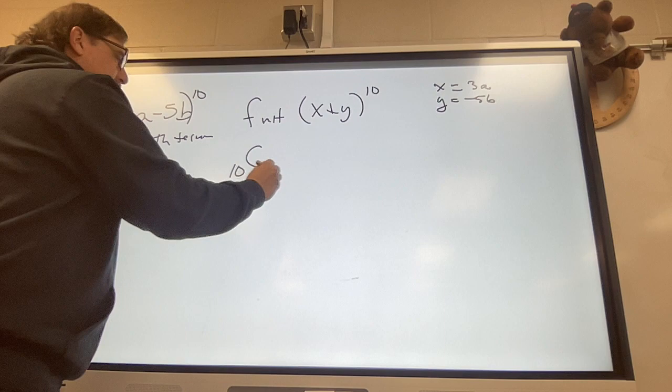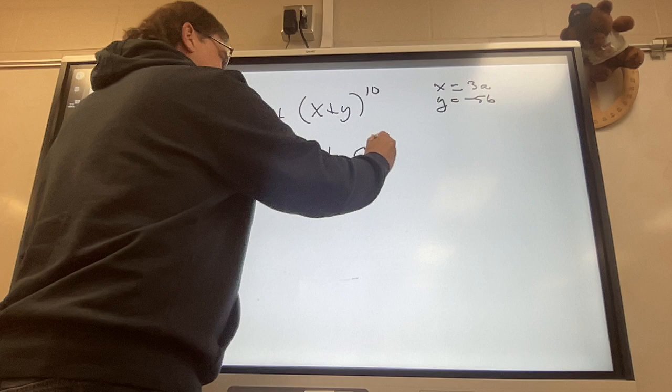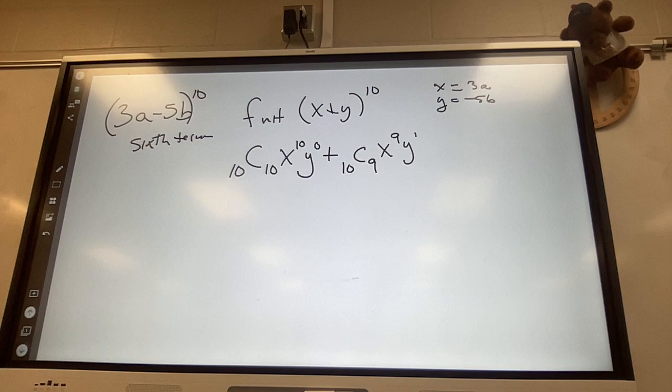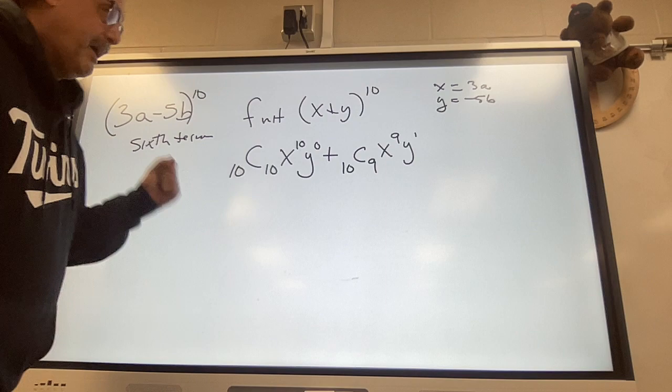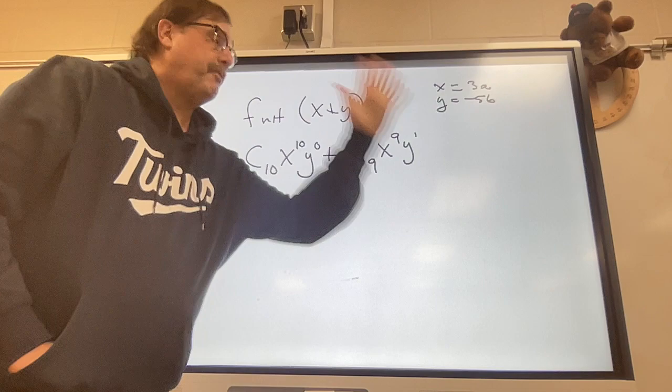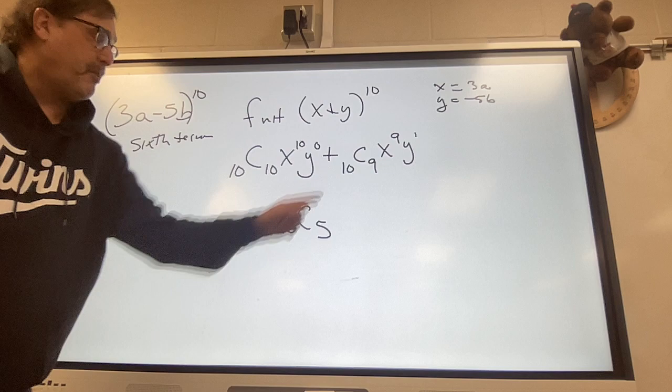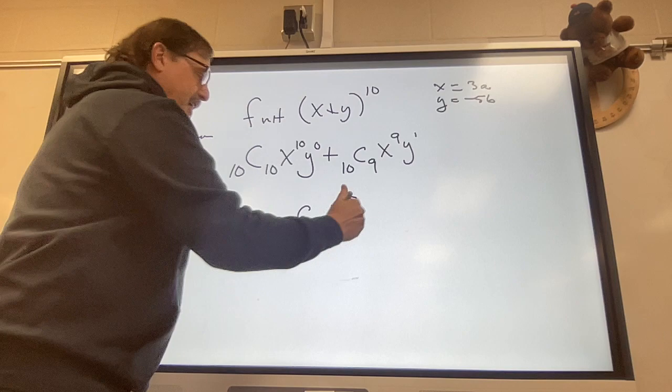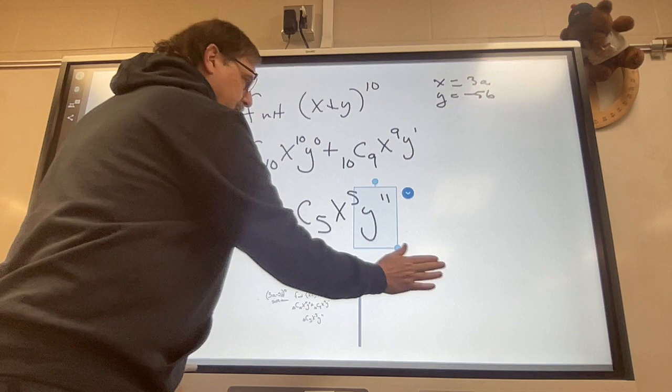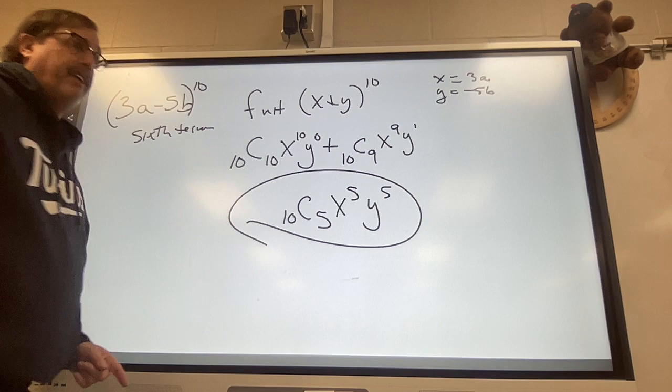So x plus y to the tenth, you could go to the tenth row of Pascal's triangle, which, it's pretty big. You would have to make that. It's not hard, just lengthy. Or you could do it this way. The first term would be this: out of ten, you're choosing all ten x's. The second term, out of all ten, you're choosing nine. Well, you could write them all out, or we could use our fingers. I'm trying to get the sixth term. So the second term has a nine. I'm going to use my fingers.